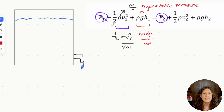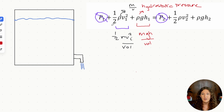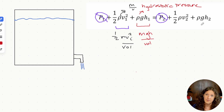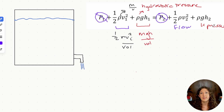The kinetic energy term represents fluid dynamics — the forward flow when fluid is moving. We're comparing forward flow to hydrostatic pressure. As we have more forward flow, we have less hydrostatic pressure. Conversely, greater hydrostatic pressure means less forward flow through the vessel.